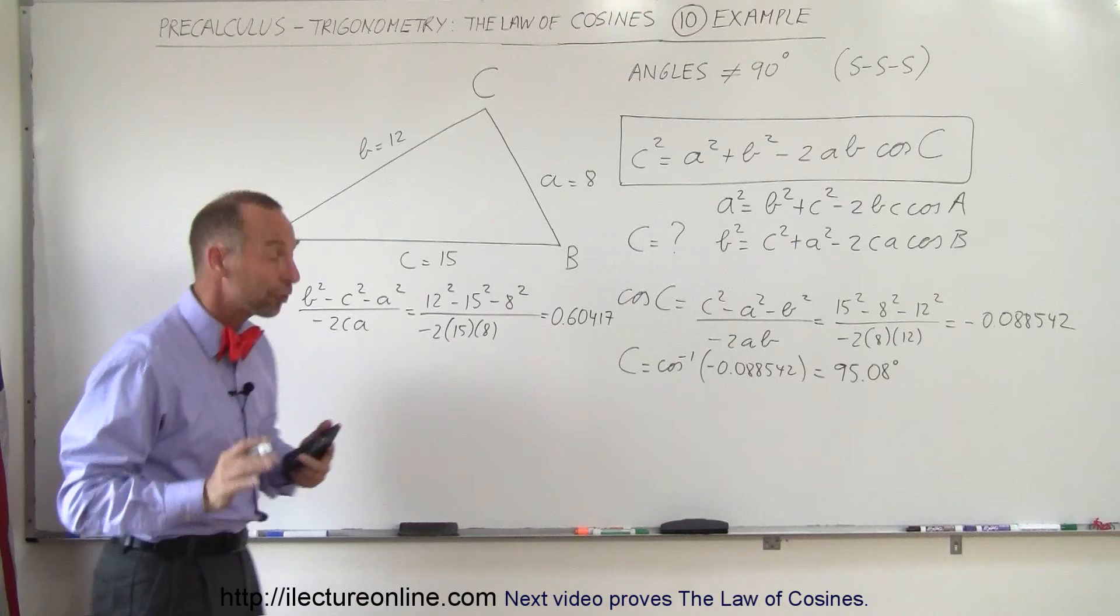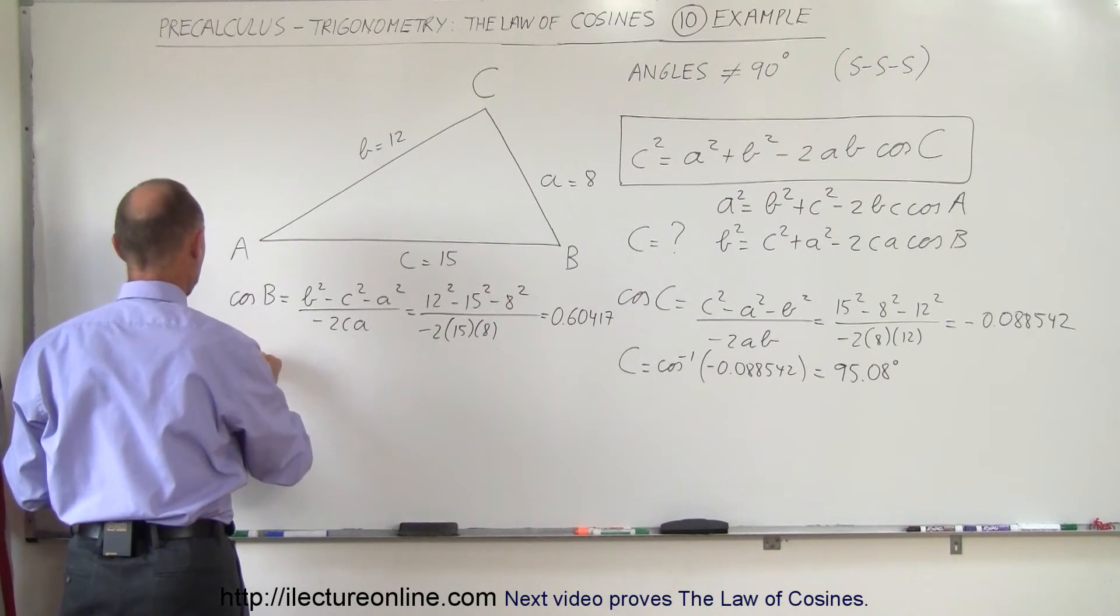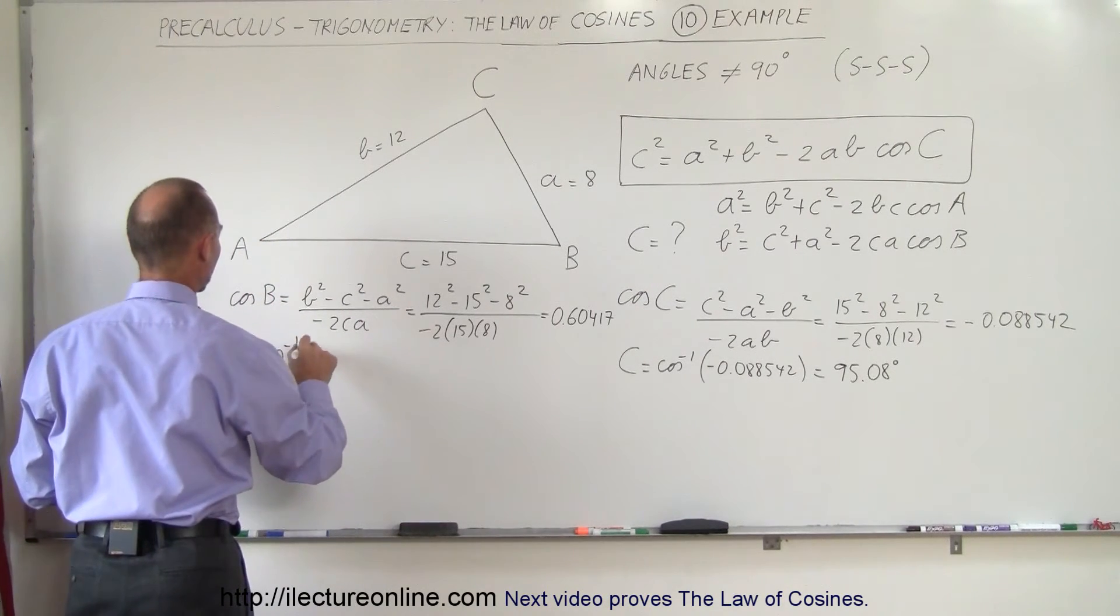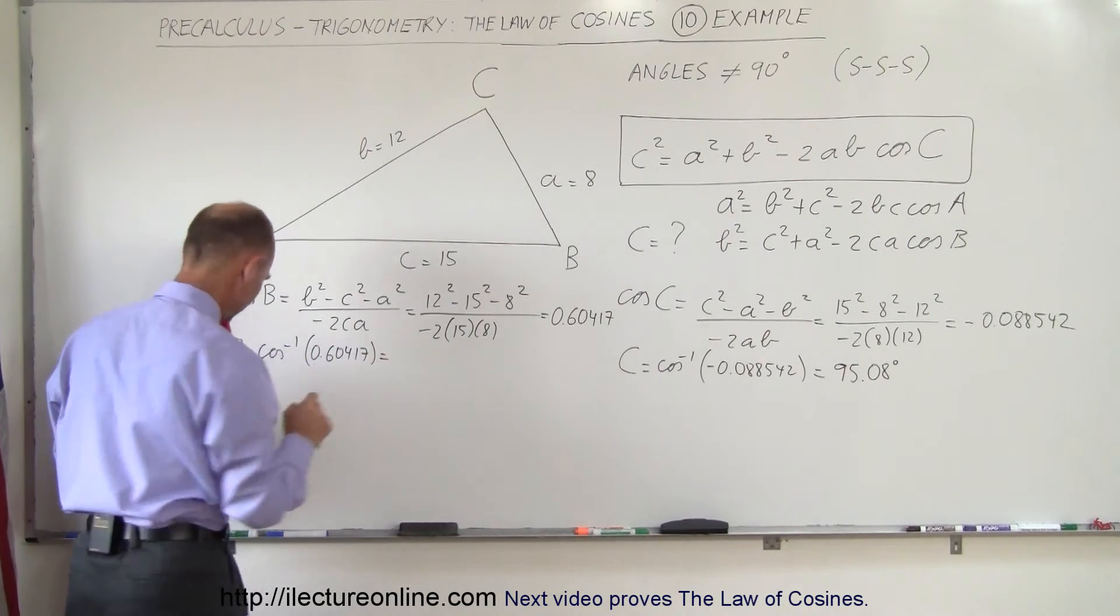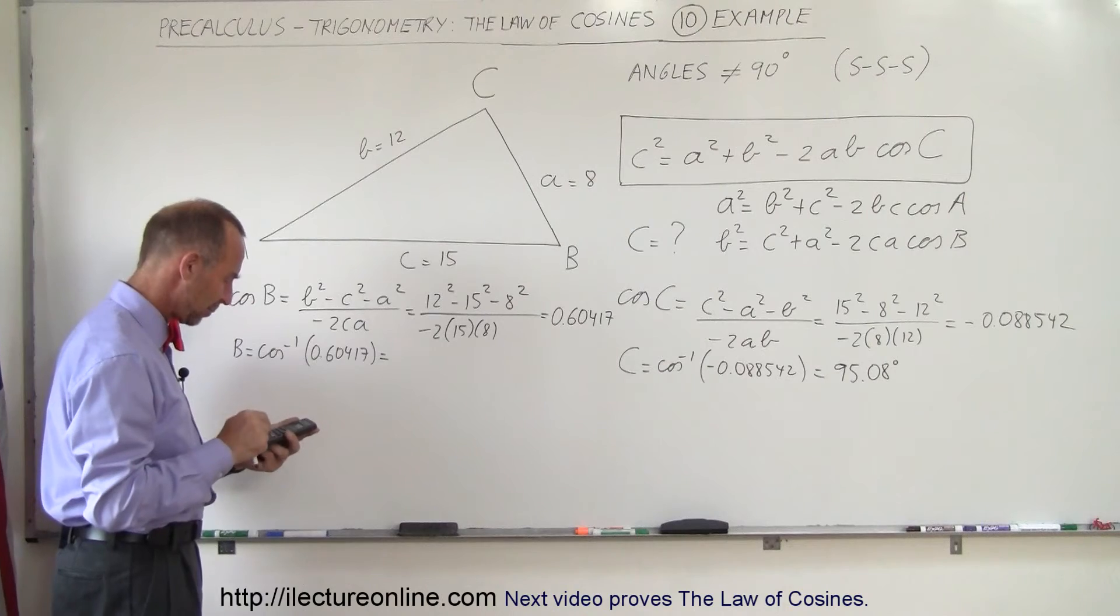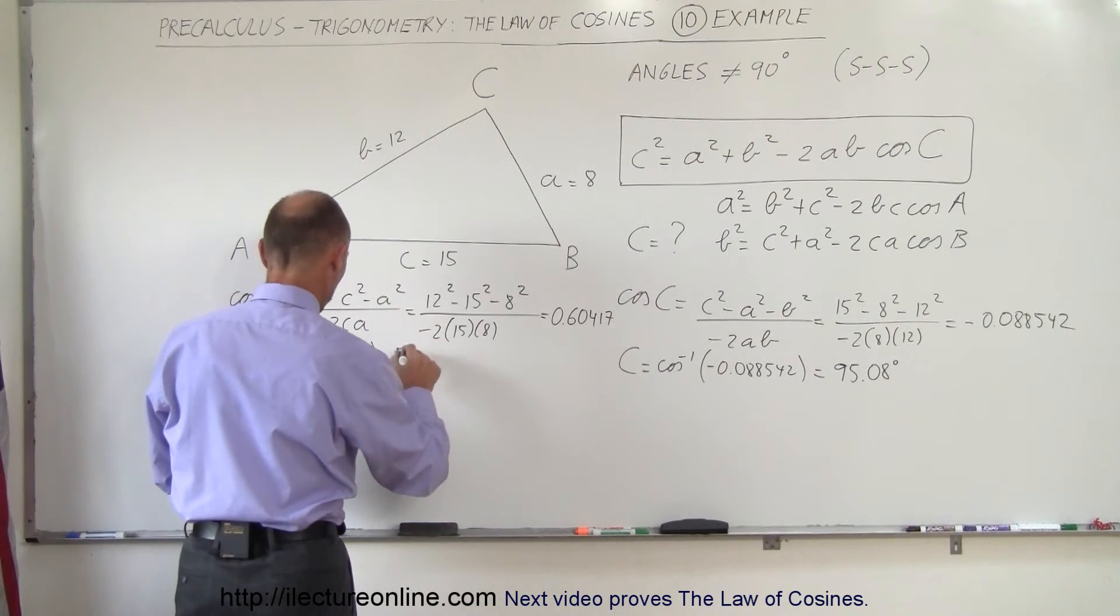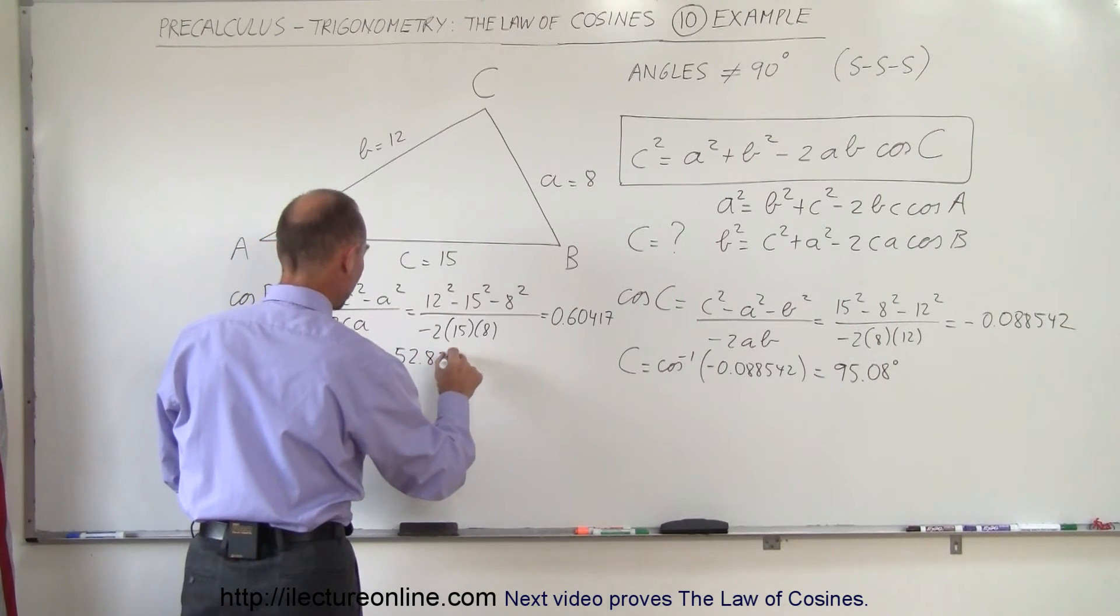Now let's take the inverse cosine of that. So B is equal to the inverse cosine of 0.60417. We get 52.83 degrees.